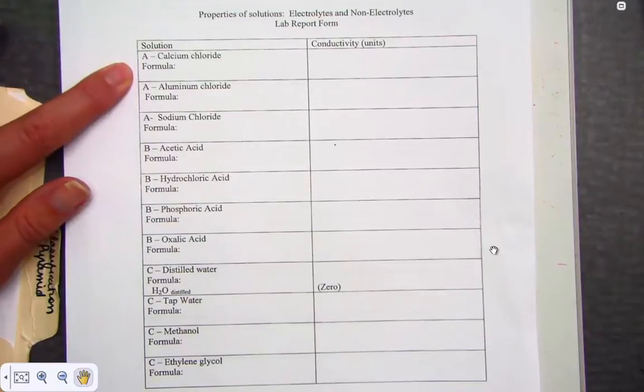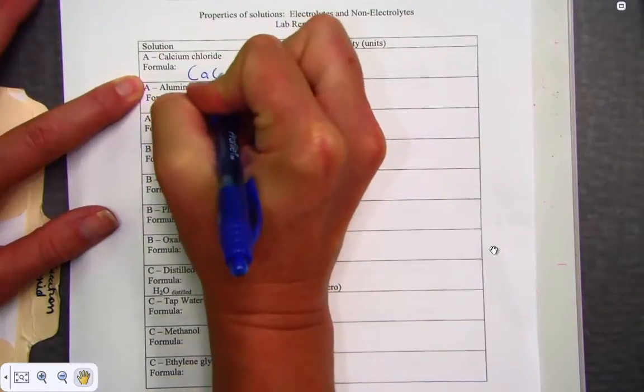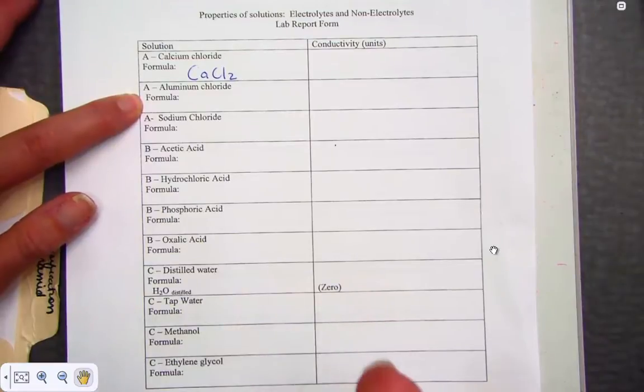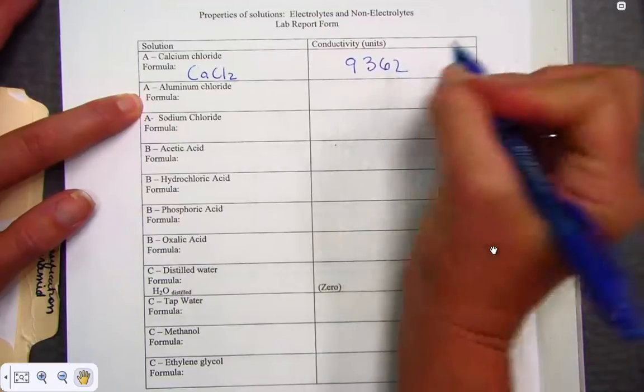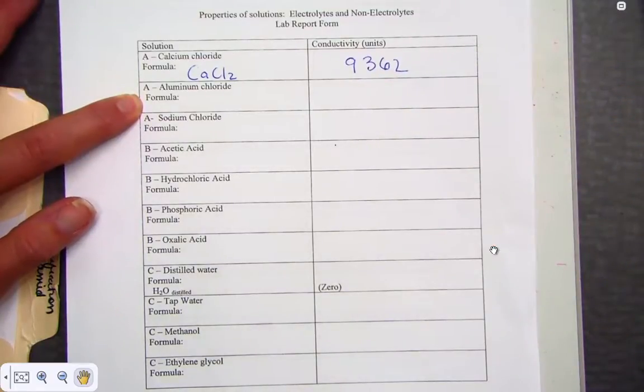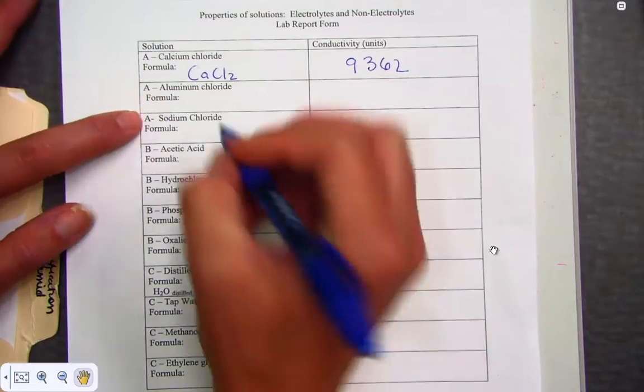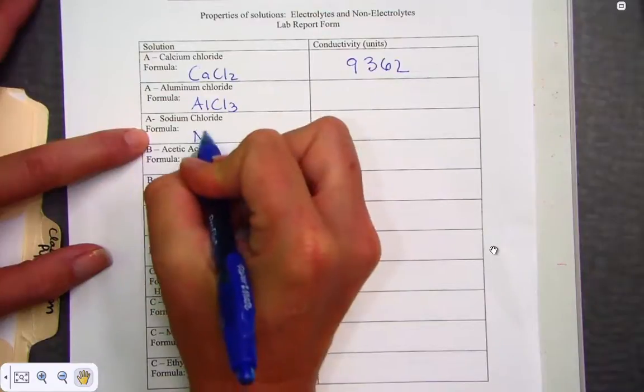When I take a look at the solutions from part A, the first one, calcium chloride, CaCl2. When we place the conductivity meter, and I'm giving you approximate values. When I conducted the experiment, I saw a value of about 9,362. I'm not asking you to change what you saw. Each conductivity meter is going to give us a unique value. They were not calibrated for each other. But all we're looking to do is to compare the values from one meter to the next. We placed aluminum chloride, AlCl3, and sodium chloride, NaCl.